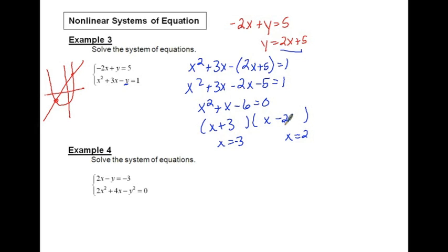Now are we done? No. We've only figured out half the answer, haven't we? Here we're going to have two answers. One is a negative 3 comma something and the other one is going to be 2 comma something. We've got to figure out those y values now given those x values.